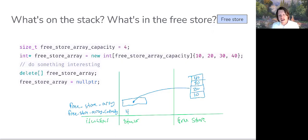So free_store_array_capacity is going to start out with the value of four. We can see that named object right there on the stack. Now, free_store_array, that is a named object, and the object is going to be a pointer to an integer object. We can see that's setting up a new entry on the stack.